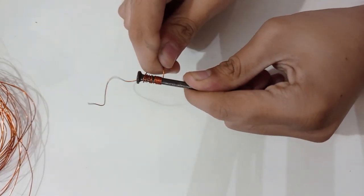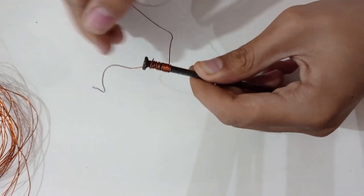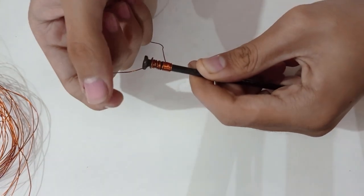Now, we will bind the wire tightly around the nail in the form of a coil, leaving some extra length at both the ends.